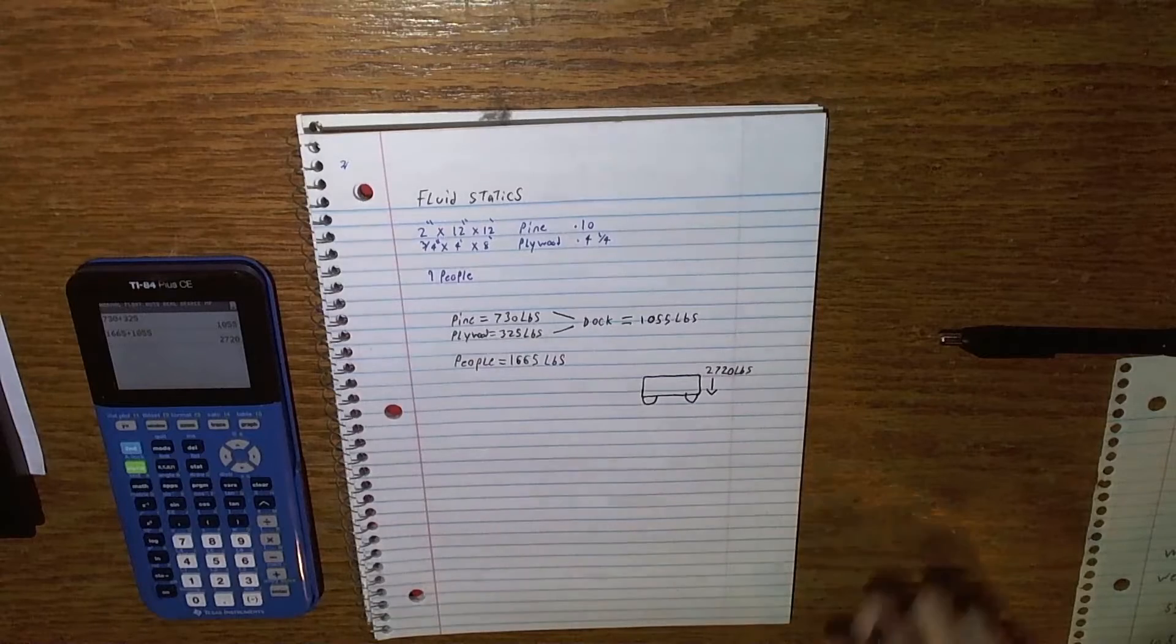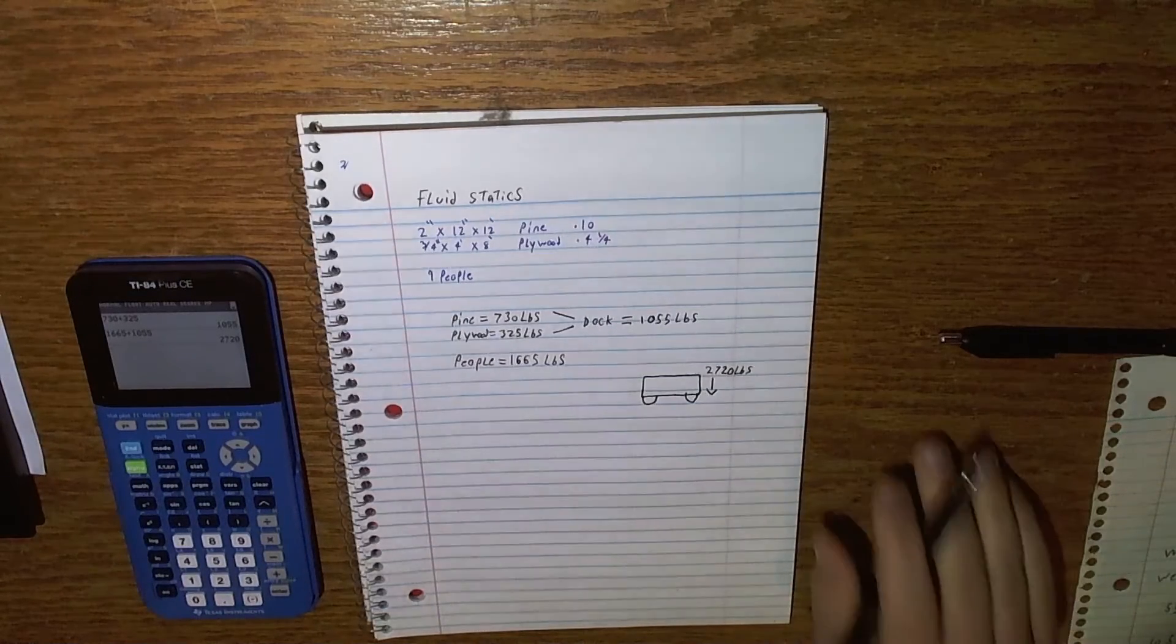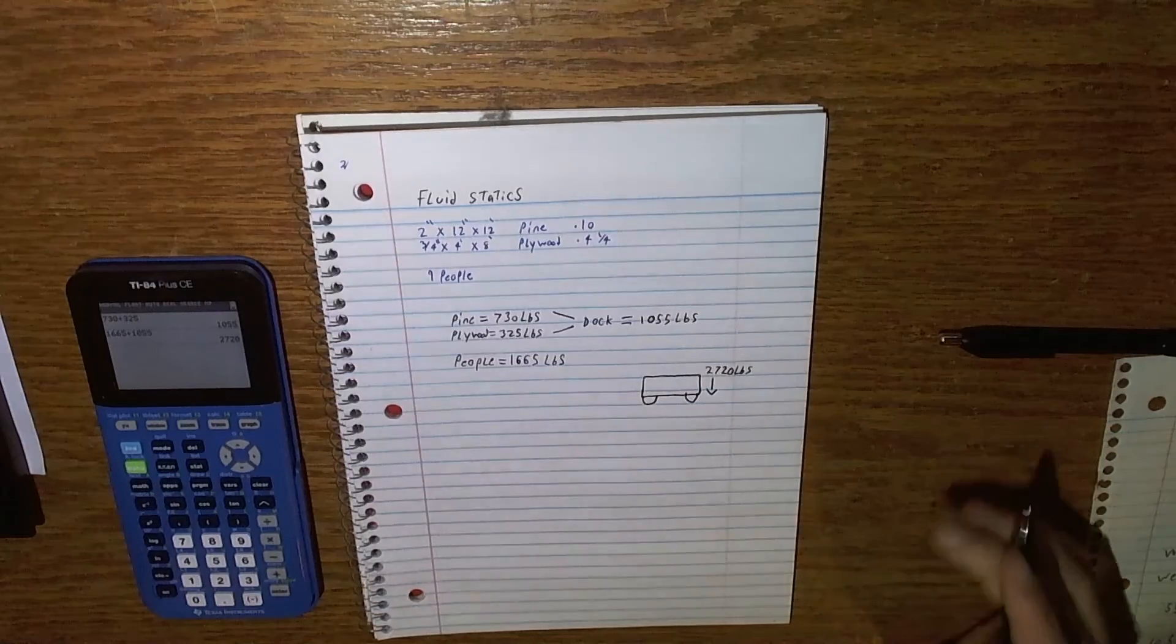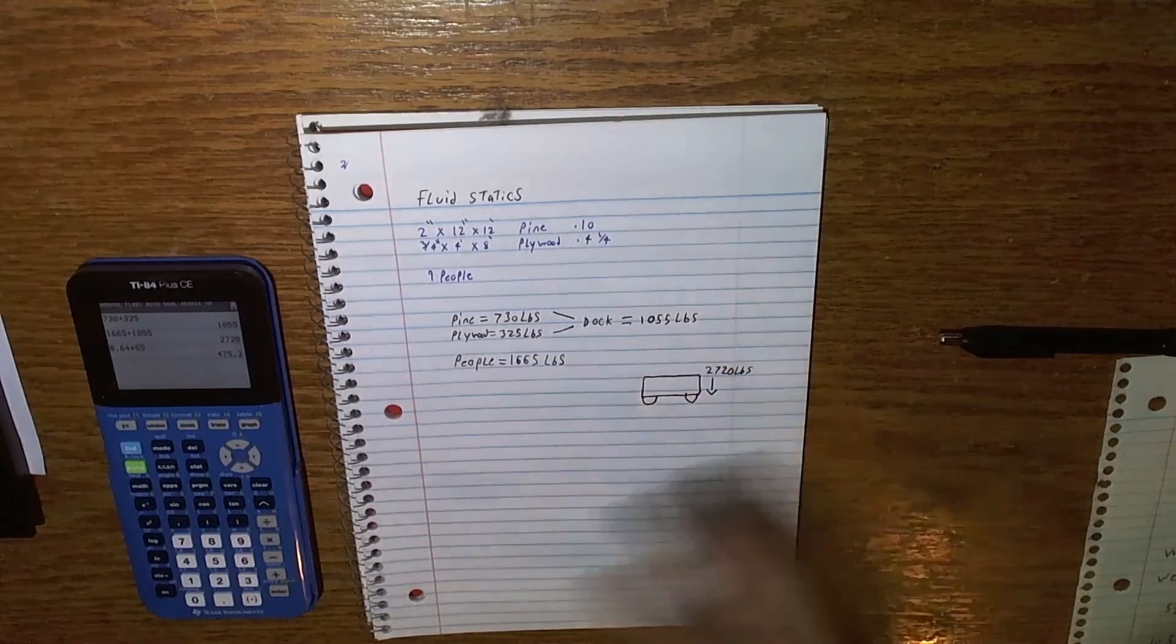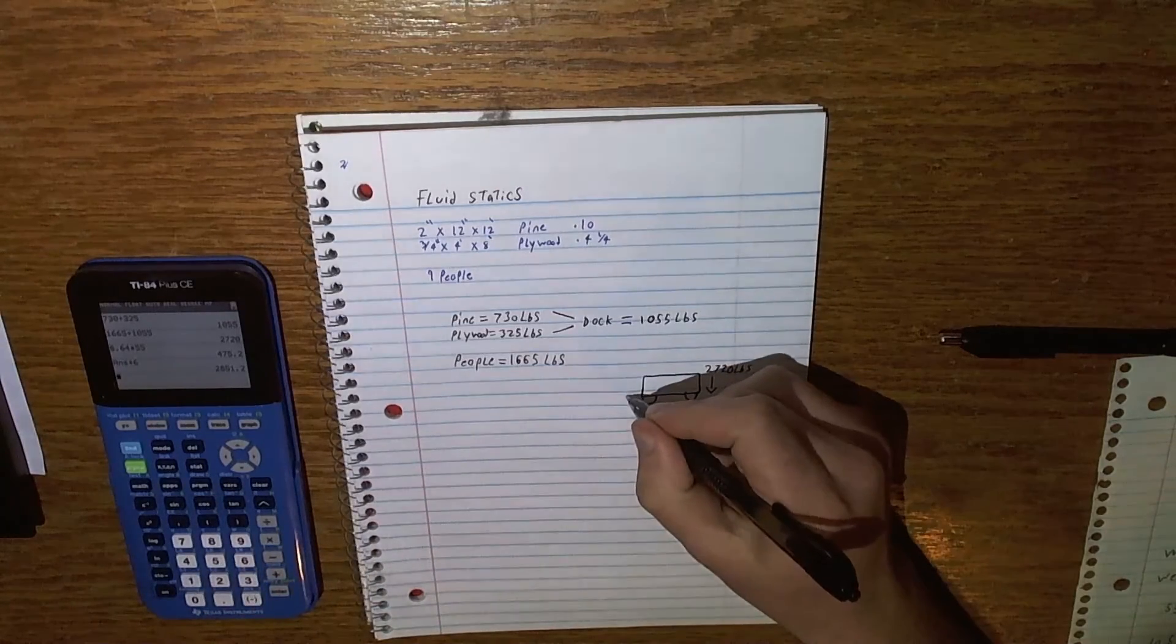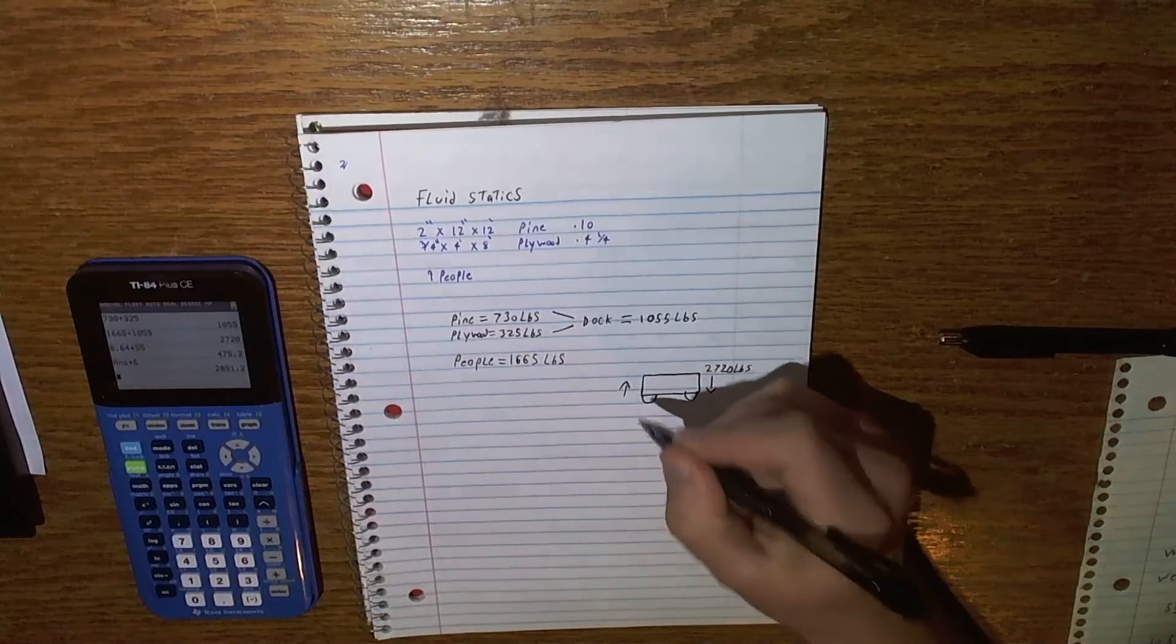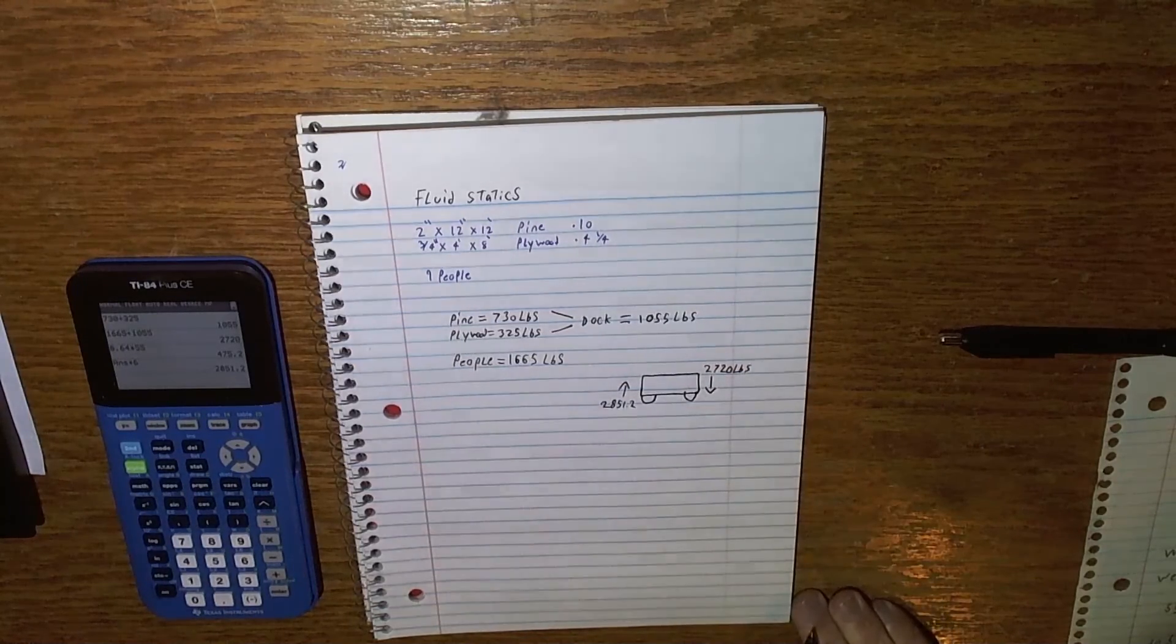And water is 8.64 pounds per gallon. And if we're displacing it using 55 gallon drums, that is 475.2 times 6, which is a weight up of 2851.2.